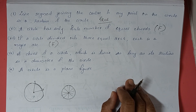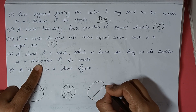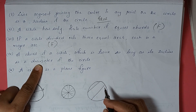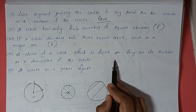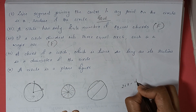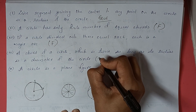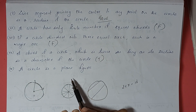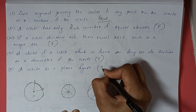Next: a chord of a circle which is twice its radius is the diameter of the circle. A chord which is twice the radius means 2 × radius = diameter. So this is true. Finally: a circle is a plane figure. The circle is drawn on a plane, so that is a true statement.